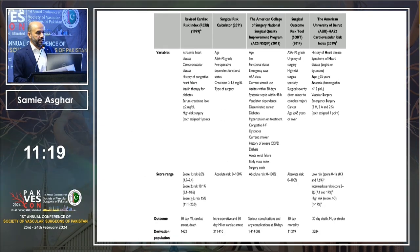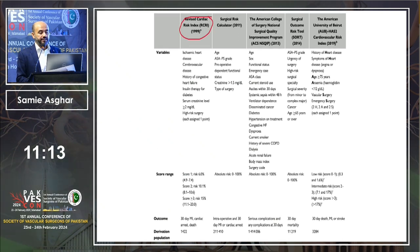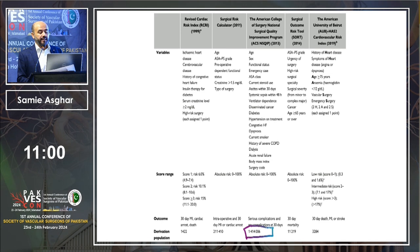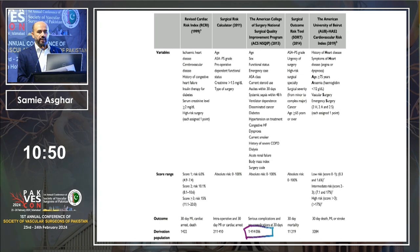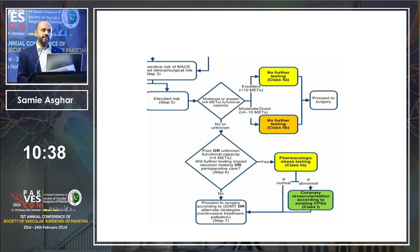How do you determine the risk of surgery? There are different scores. The oldest is the Revised Cardiac Risk Index, which relies on six parameters. The most validated one is the NSQIP score, validated in 1.4 million patients. All these calculators are available online on MD Calc. Using those calculators, you can categorize the patient as low, intermediate, or high surgical risk. Most vascular surgeries are not low-risk surgeries.